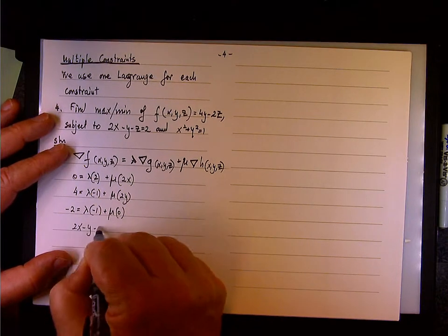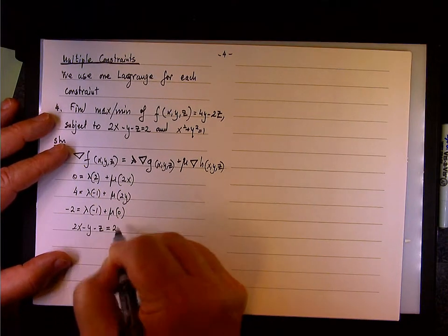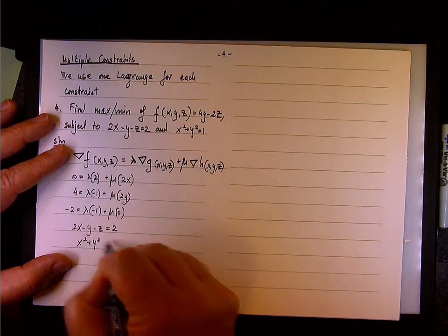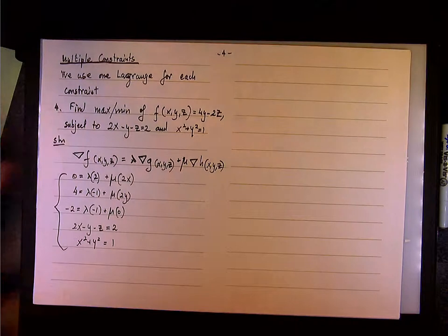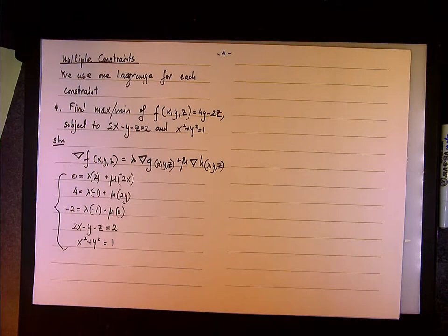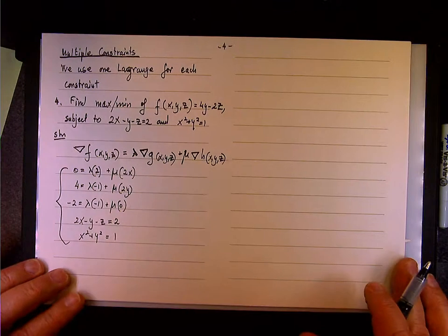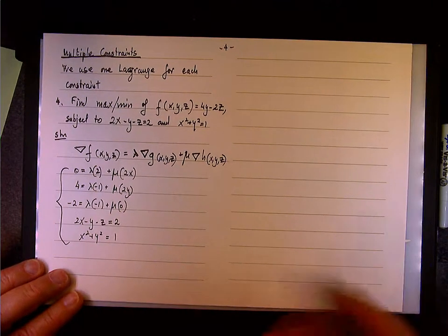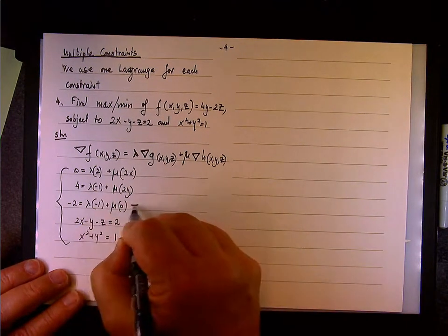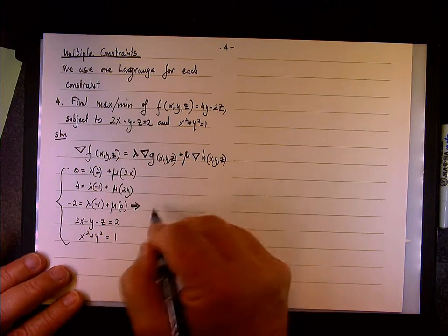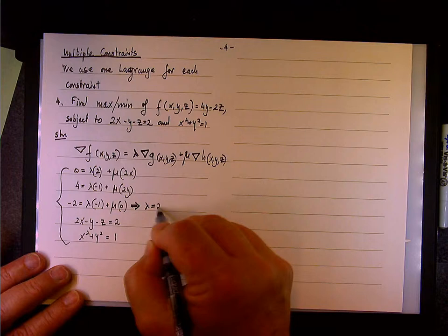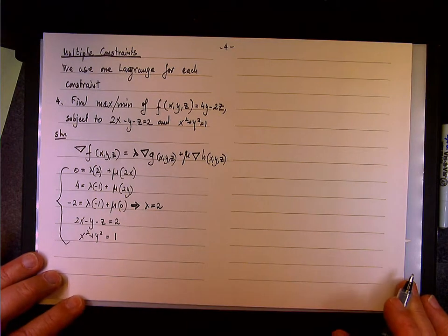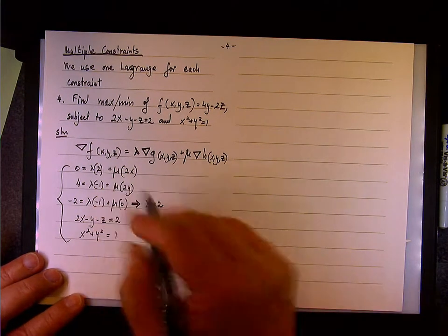The last two equations are the constraints: 2x minus y minus z equals 2, and x squared plus y squared equals 1. So we have a system of five equations with five variables: x, y, z, lambda, and mu. From the third equation, since mu multiplies 0, we get negative 2 equals negative lambda.